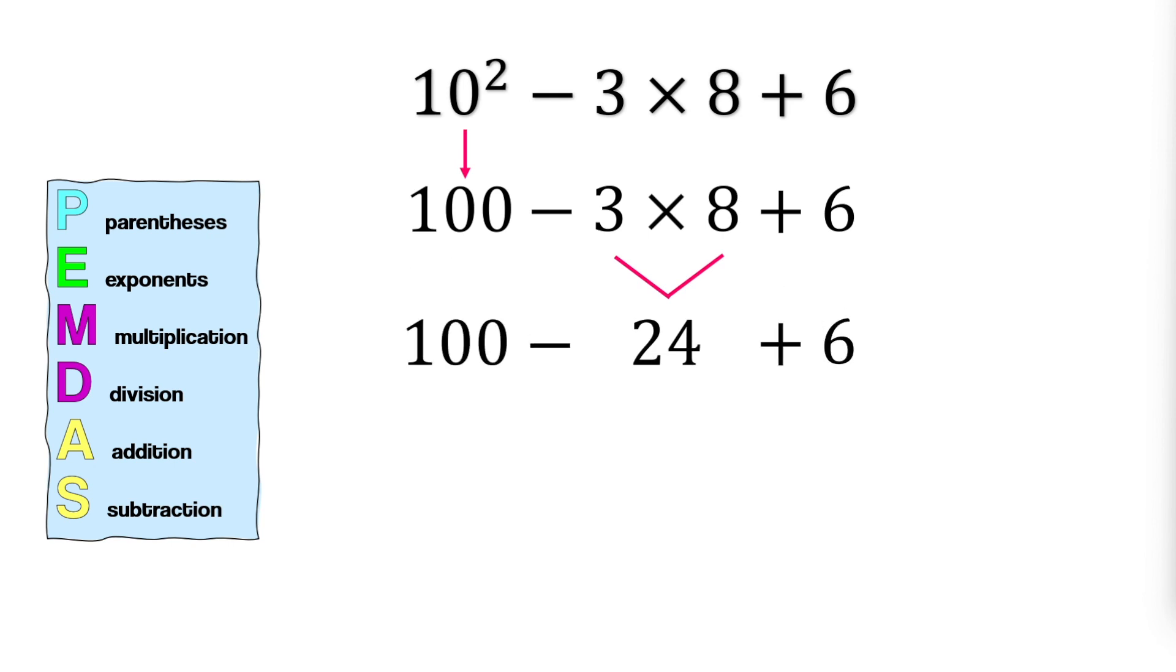Finally, we perform the addition and subtraction from left to right. We see subtraction first from left to right, so subtract first. 100 minus 24 equals 76. Then add 76 and 6. 82 is our final answer.